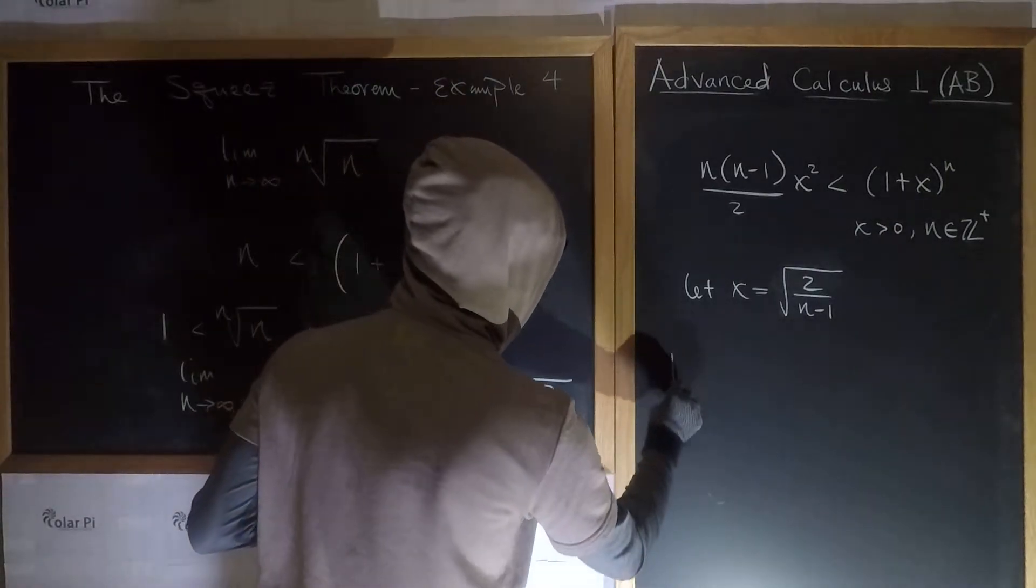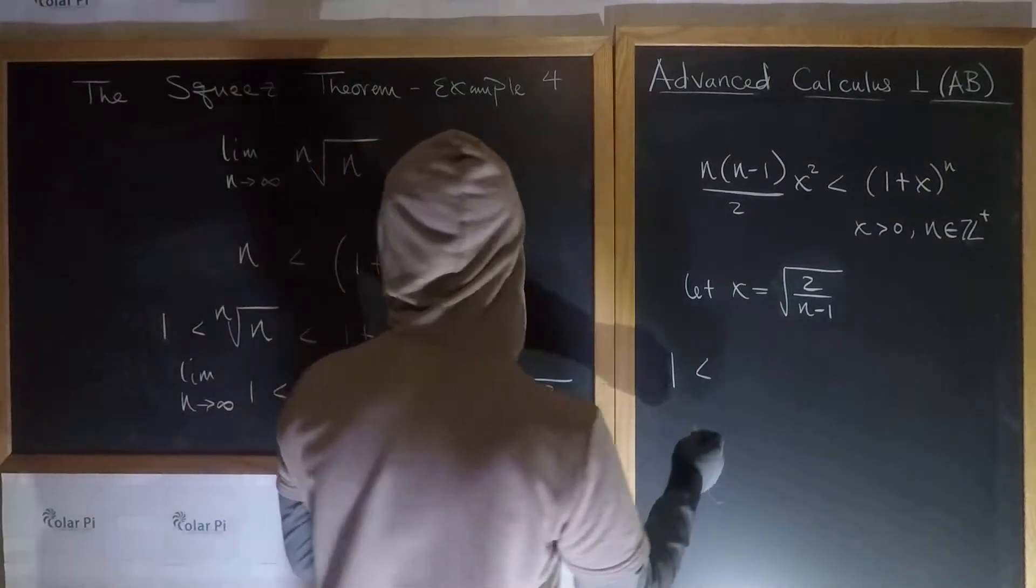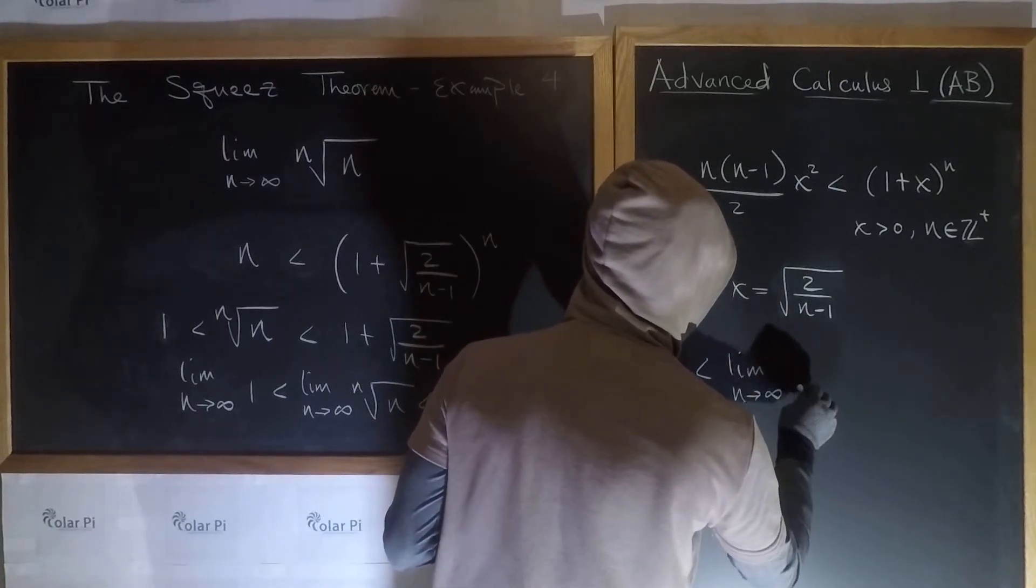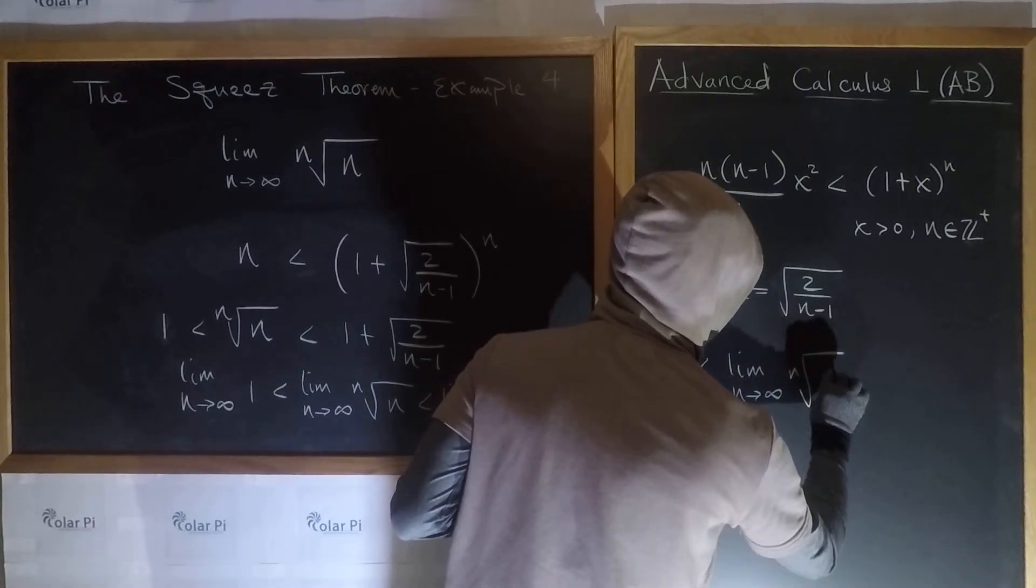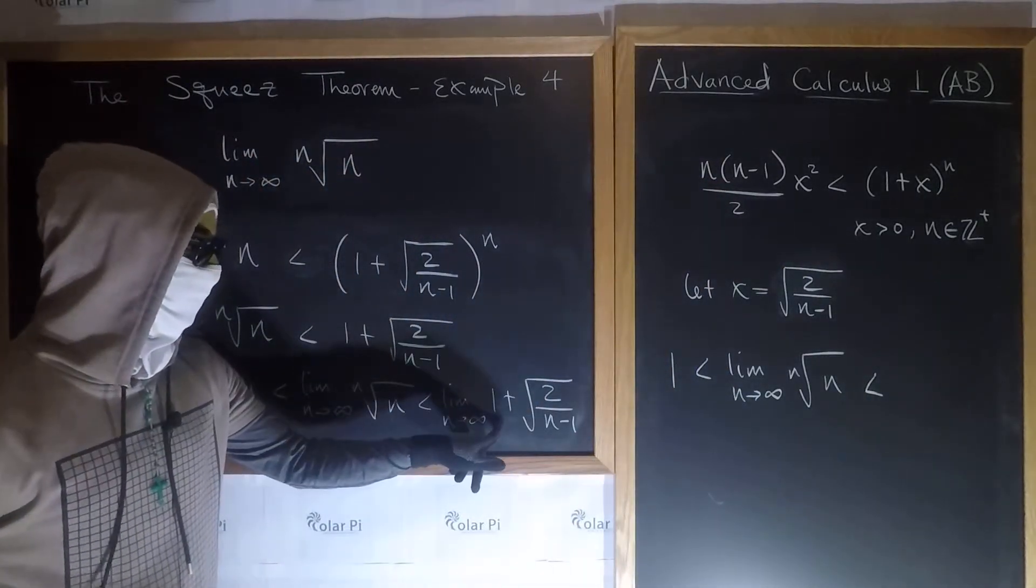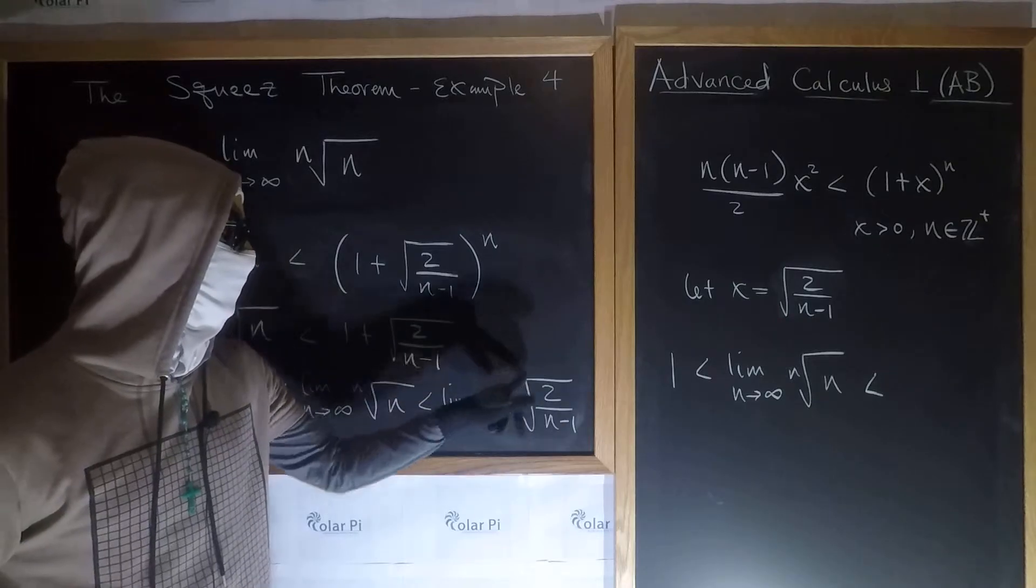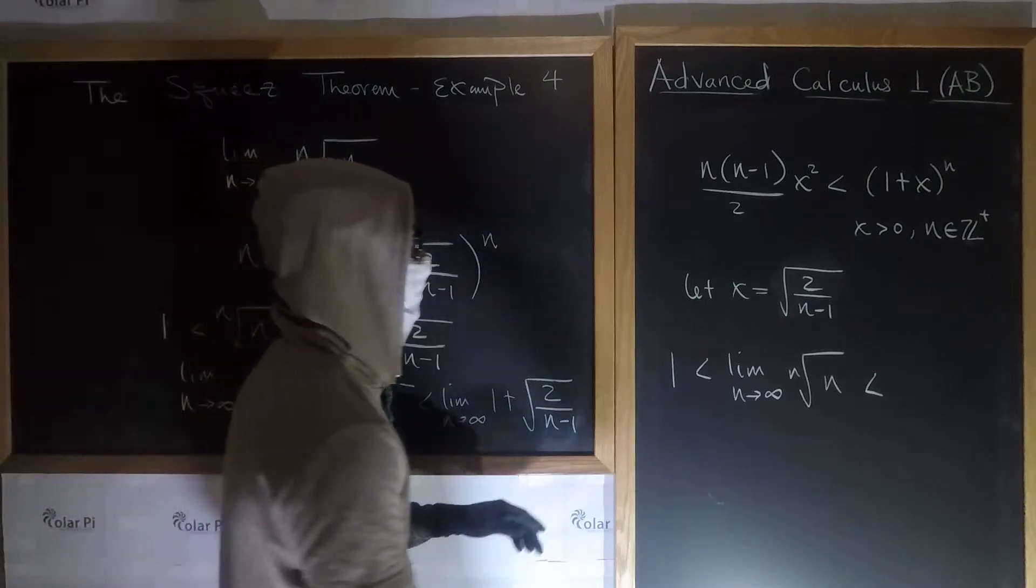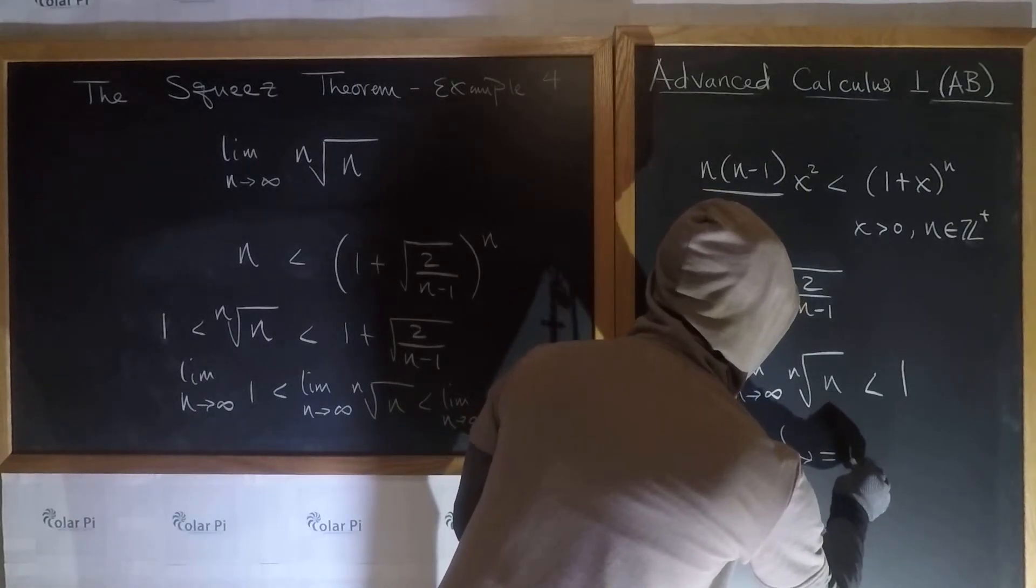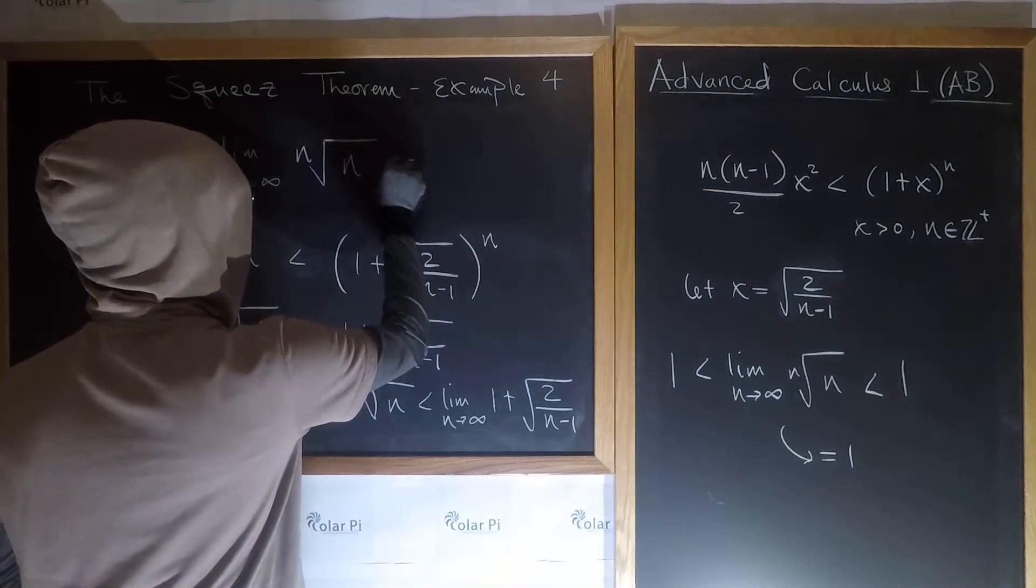So we have 1 is less than our desired limit, which is lim as n goes to infinity of nth root of n, which is less than what's this limit here? Well, we have 1 plus, as n goes to infinity, this guy's gonna go to 0, so you just get 1. And therefore, by the squeeze theorem, our desired limit is equal to 1. This here is equal to 1.